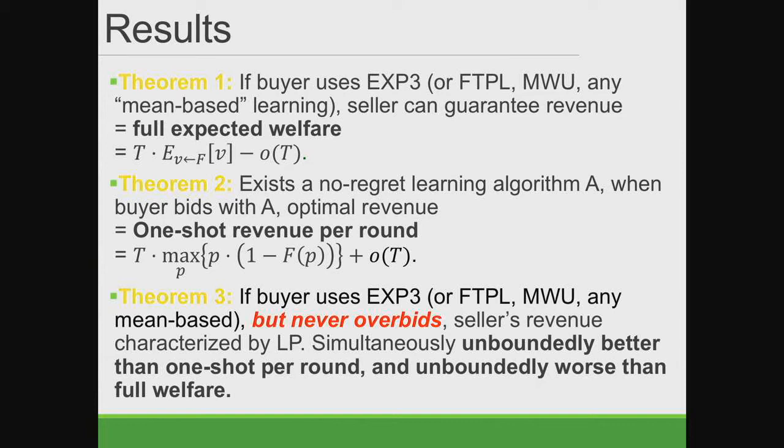Our first result: if the buyer uses some standard no-regret learning algorithm — we define a class called mean-based algorithms, and as long as the algorithm is in this category (e.g., EXP3) — the optimal seller revenue is the full expected welfare. This is very large. If the seller achieves this revenue, the buyer's utility is at most o(T), even if the buyer gets all the items. So this revenue is the best we can hope for up to additive o(T) terms.